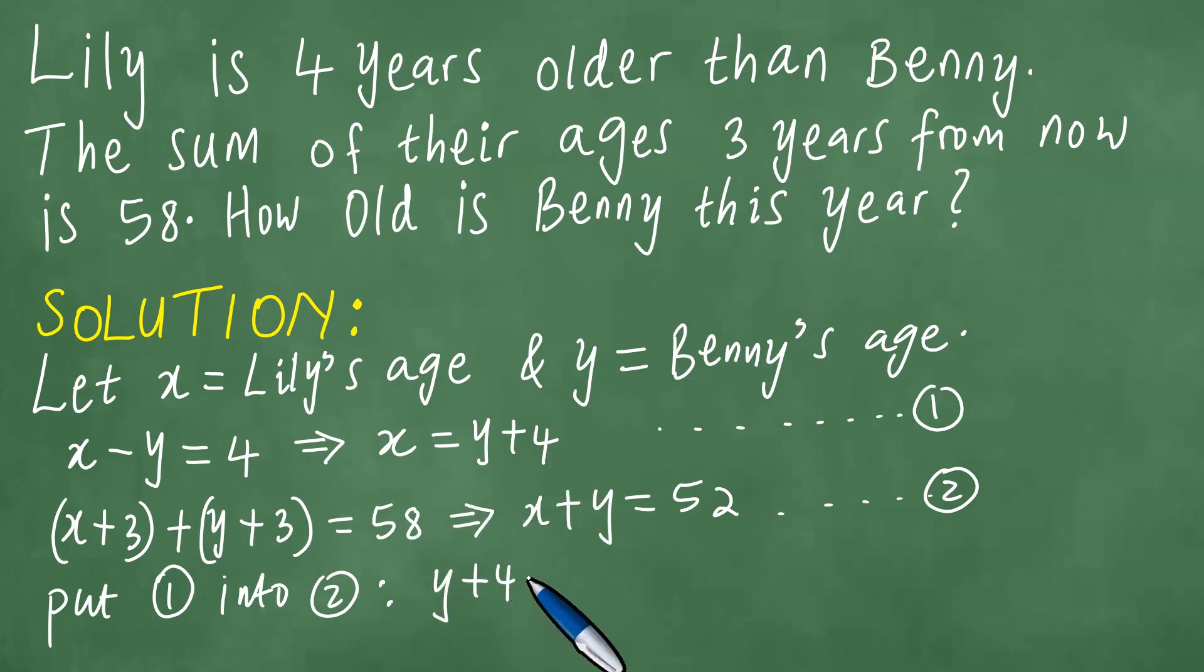So that we have y plus four in the place of x. But there is a y and this equals 52. Right, so we proceed and say we have y plus four plus y equals 52.